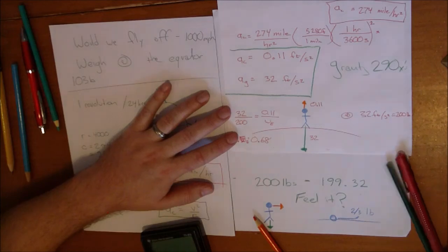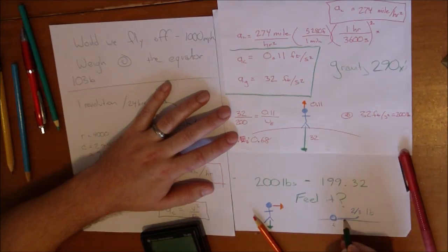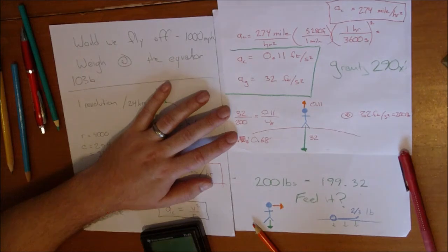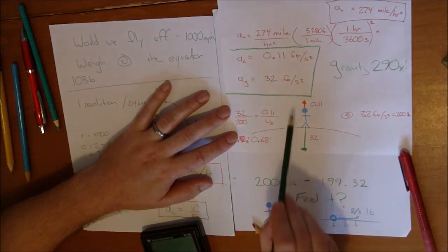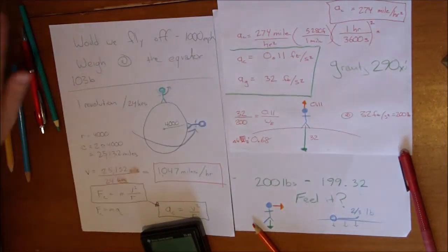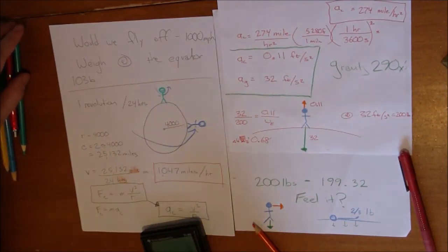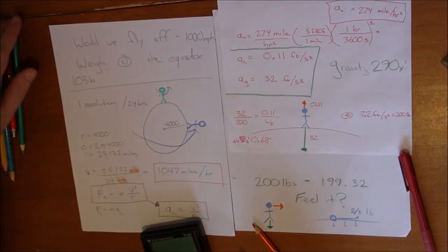All it would do is slightly, ever so slightly, increase the pressure into your mattress. You would not feel it. So the main reason why it's indiscernible is the fact that the centrifugal effect is so much smaller than the perceived effect of gravity. And secondly, because they are in the same axis. So there are some interesting things with the Earth supposedly spinning, and we'll get to those. But for now, how much would I weigh at the equator versus the pole? About a third of a percent difference. And would we fly off? Absolutely not. I'll see you next time.